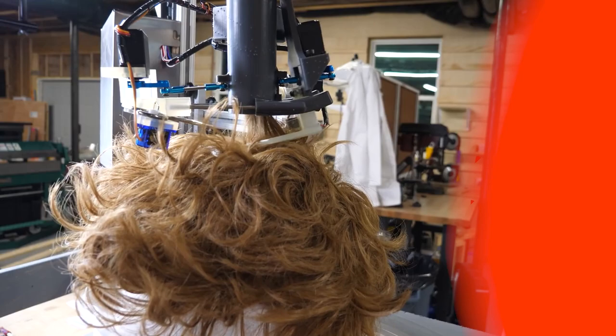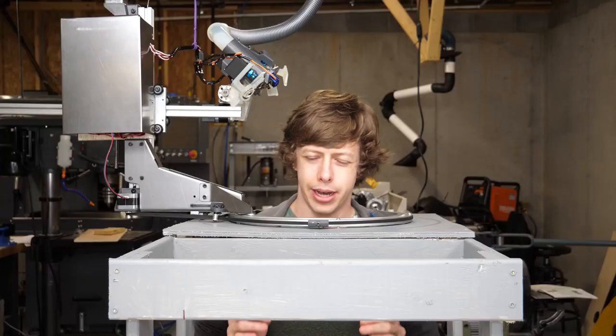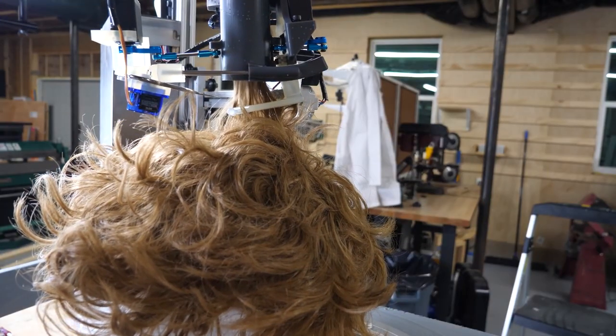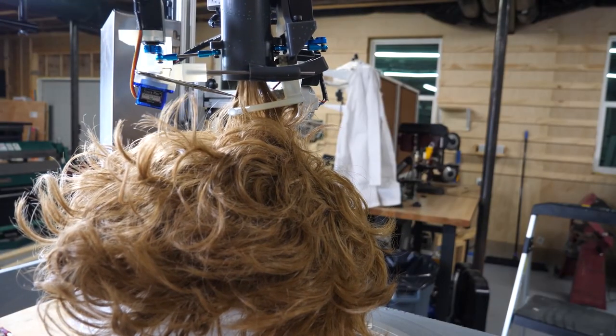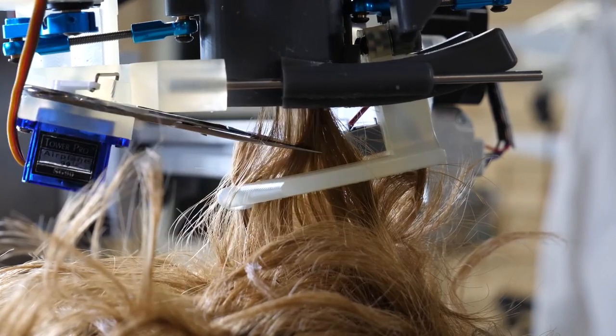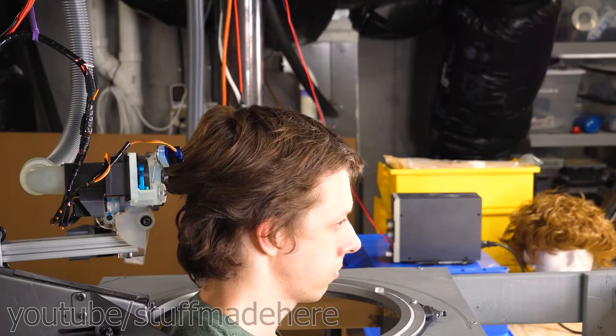Chances are it's been a while since your last haircut. To help you out, Shane from Stuff Made Here made this incredible, slightly terrifying haircutting robot. You just stick your head up through the middle of this large bearing, and a pair of servo-controlled scissors makes its way around your head over the course of 15 minutes.